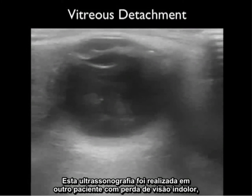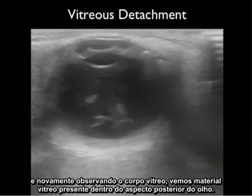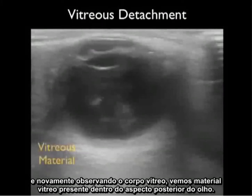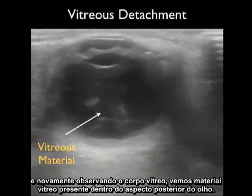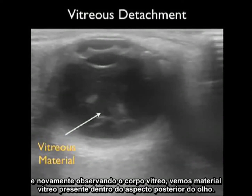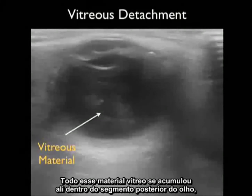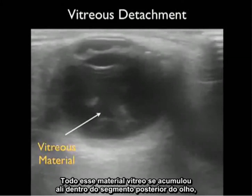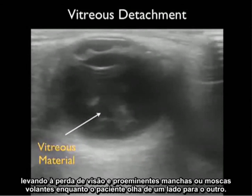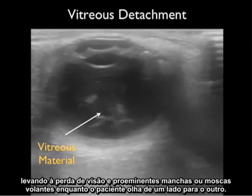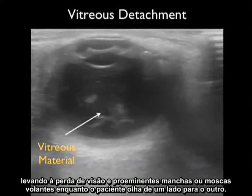This ultrasound was taken from another patient with painless loss of vision. Looking into the vitreous body we see vitreous material present within the posterior aspect of the eye. This is the classic appearance of vitreous detachment — vitreous material accumulated in the posterior aspect of the eye leading to vision loss and prominent speckles or floaters as the patient looked from side to side.